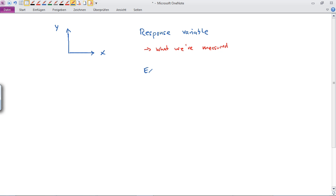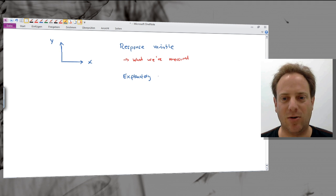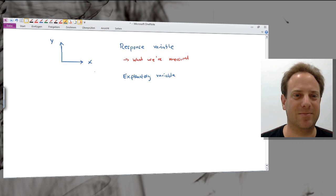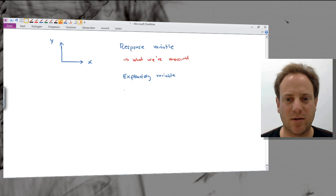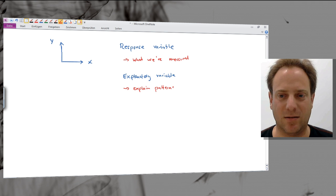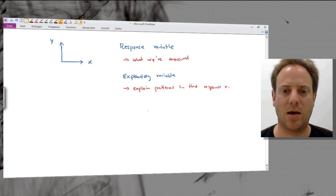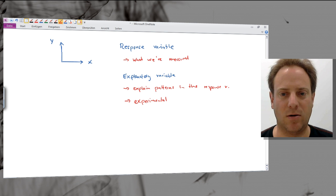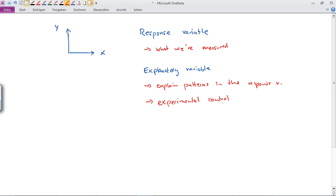What are the explanatory variables? As the name already says, it's a variable that explains something. The explanatory variables are variables that explain, or at least we believe that they explain, patterns in the response variable. Usually we have experimental control over the explanatory variables, so that's what we have manipulated experimentally.